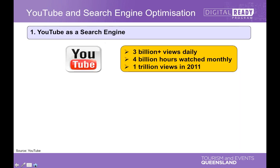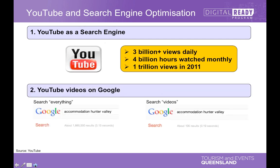It's a good time to consider where the video is actually going to appear and who is going to search for it. There are 3 billion views daily, 4 billion hours watched monthly, and over a trillion views in 2011 alone. YouTube is the second most popular search engine — second to Google — and it really matters how things appear in Google. Video is also an excellent way to rank in search engines. Sometimes you do a normal search covering everything, but you can also search just for videos within Google.